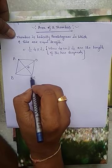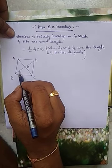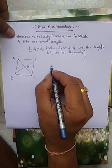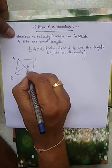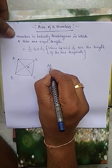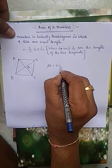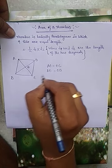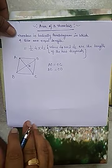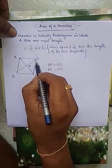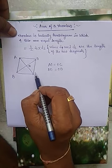In a rhombus, two diagonals are perpendicularly bisect to each other. That is, AO equals OC, and BO equals OD. Here, we have two triangles: ABD and BDC.